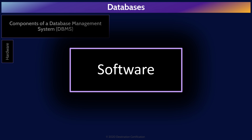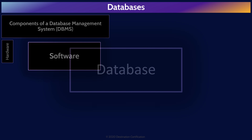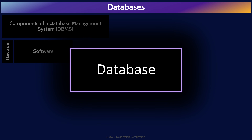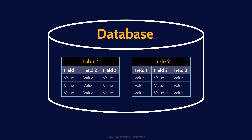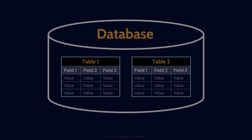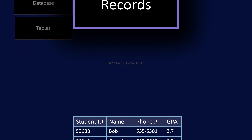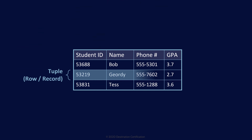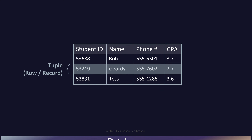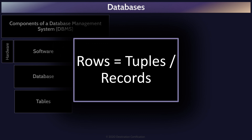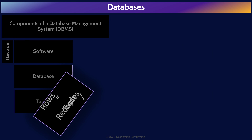The next component is the software. We first need an operating system and then the DBMS software itself that will run on the operating system. Examples of database management systems include MySQL, Oracle RDBMS, IBM DB2, Microsoft SQL Server, Amazon RDS, among many others. The DBMS software enables the control of the database.